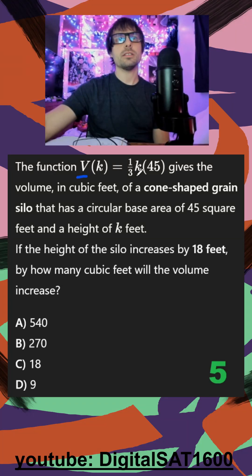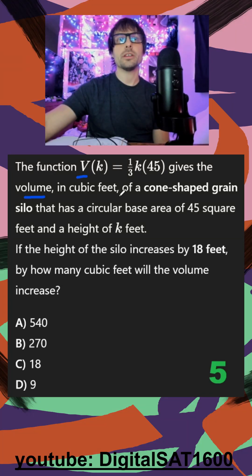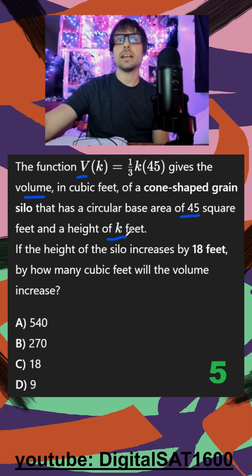The function v is equal to one-third k times 45. This gives the volume in cubic feet of a cone-shaped grain silo that has a circular base of 45 and height of k.